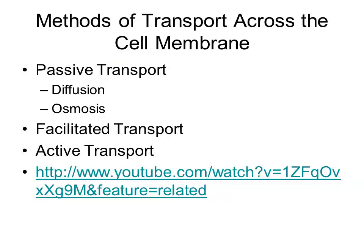Methods of transportation across the cell membrane include different types. One is passive transport, which includes diffusion or osmosis. Diffusion is the movement of particles from an area of high concentration to an area of low concentration. Osmosis is a special kind of diffusion where we're just looking at water. Then we have facilitated transport and active transport, which we'll talk about in a bit.